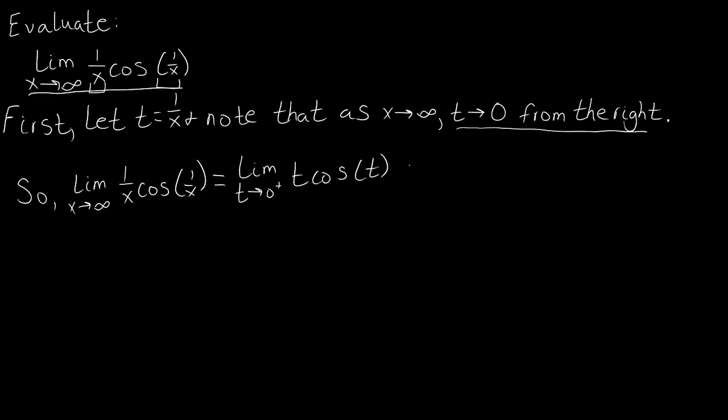So now that we have that, we're going to talk about the product law for limits. What the product law for limits tells us is that as long as we have two functions, which we have here—t is a function by itself, and cosine of t is another function—two functions that are defined for everything not equal to the thing we're evaluating at over some interval containing this, then what we can do is evaluate these limits